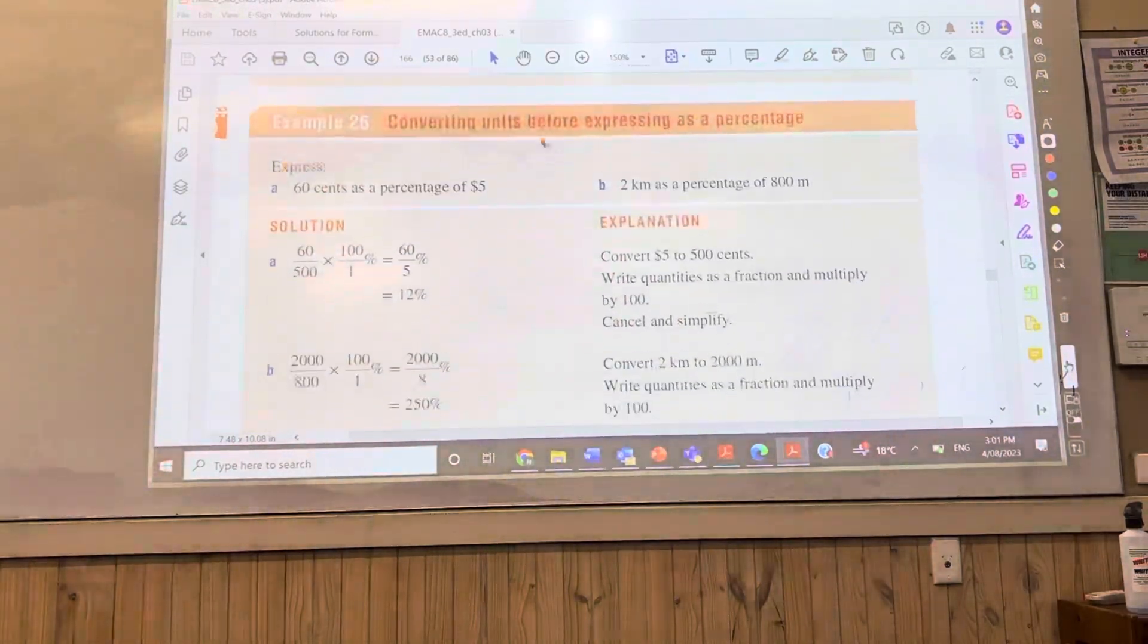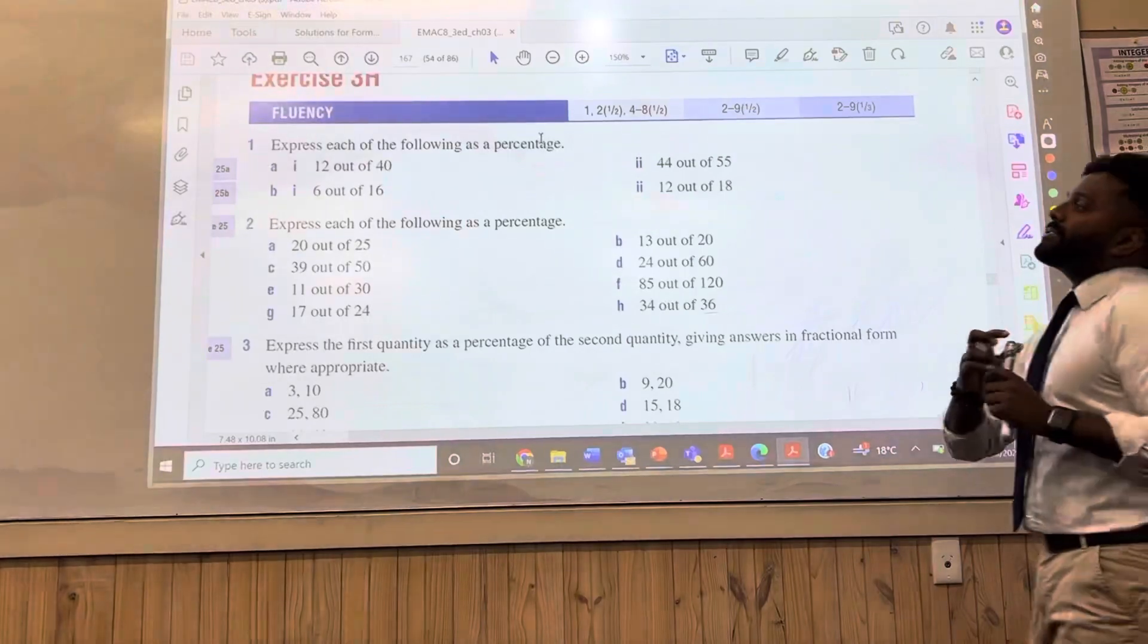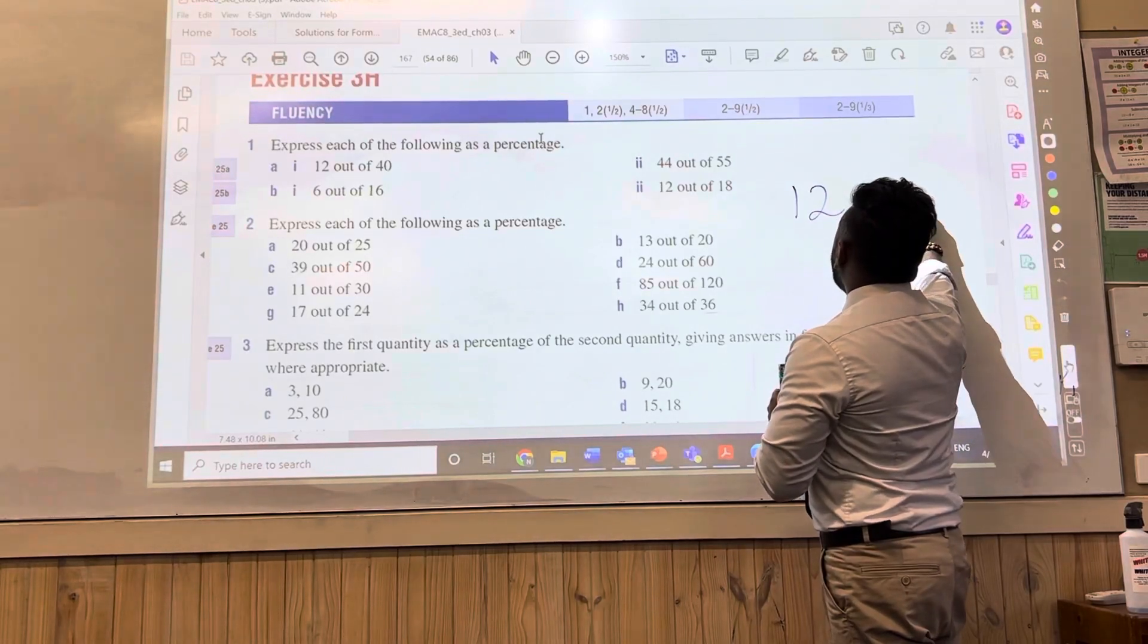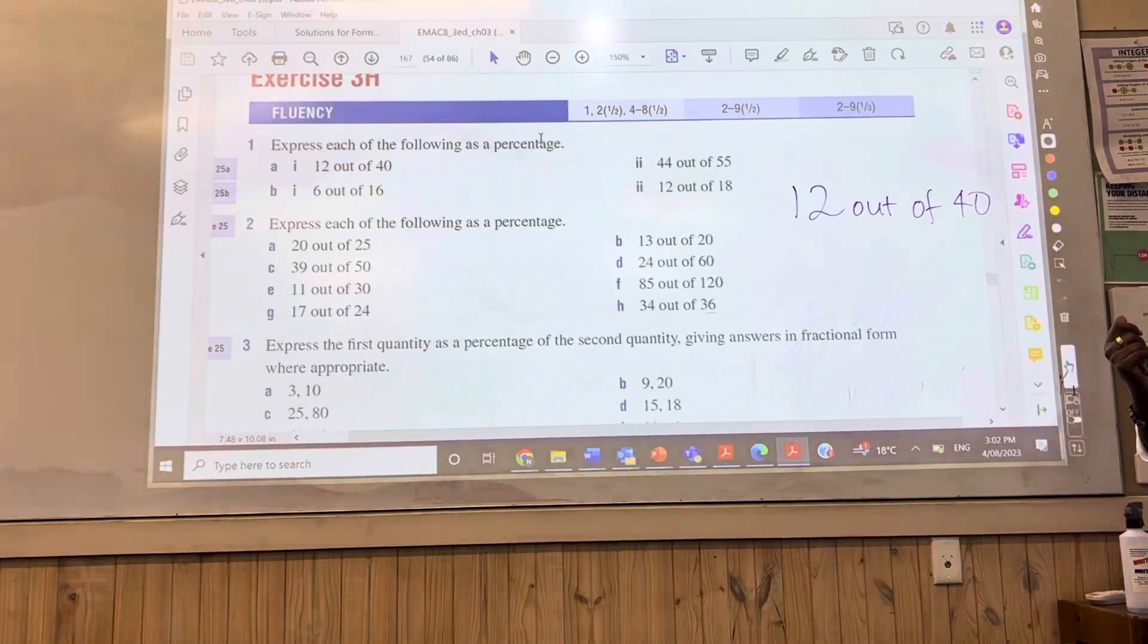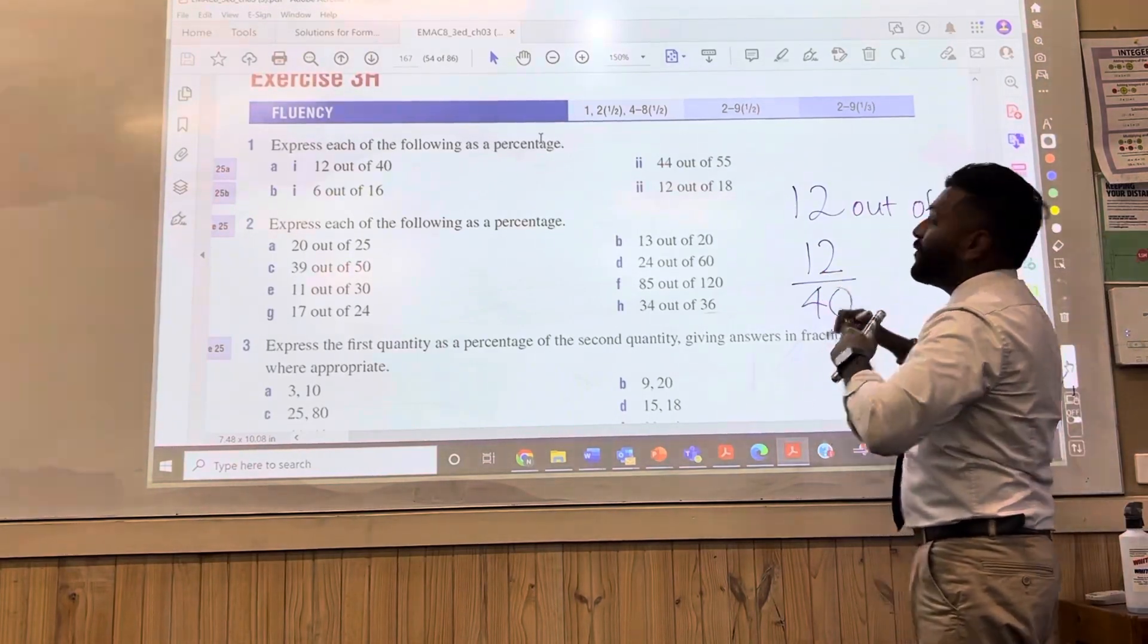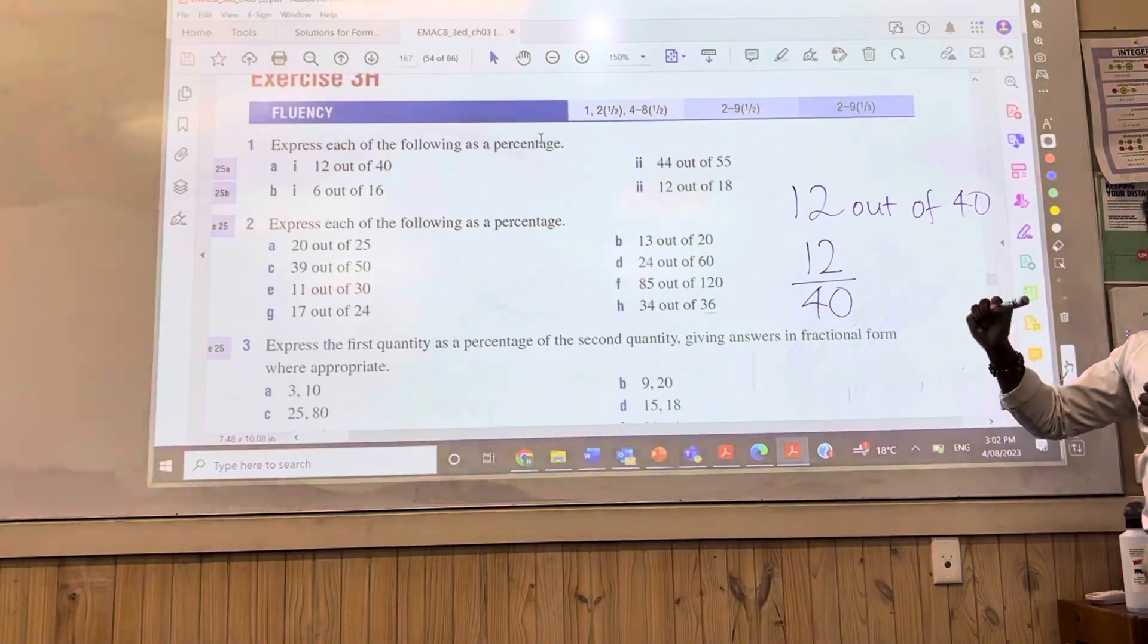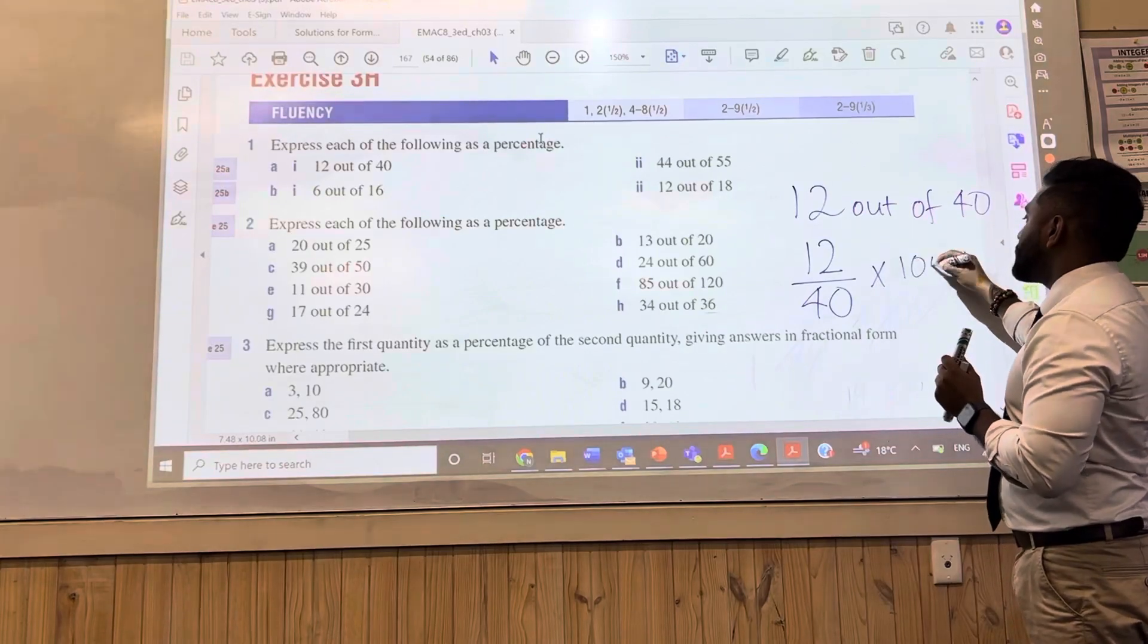So let's have a go at another question. These are some of the questions that you need to have a go at. So when it says here, 12 out of 40, what does that mean, Ava? 12 out of 40. What does that mean? How do you write that down? 12? Yeah, 12 over 40. Well done, Ava. 12 over 40. Now how do I express this as a percentage? Malale. Well done. We're going to do what Harlow said, which was times by 100.